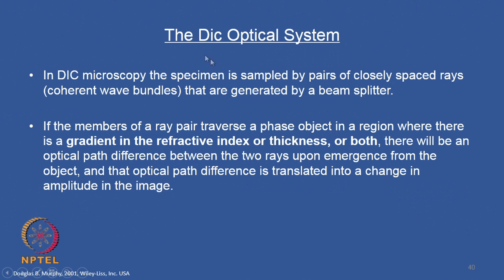We can appreciate how DIC improves contrast. In DIC microscopy, the specimen is sampled by pairs of closely spaced rays — coherent wave bundles generated by a beam splitter. If the ray pair traverses a phase object in a region where there is a gradient in refractive index or thickness or both, there will be an optical path difference between the two rays upon emergence from the object, and that optical path difference is translated into a change in amplitude in the image.